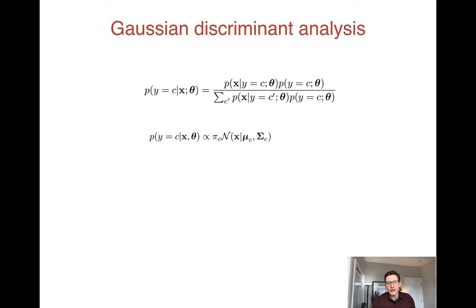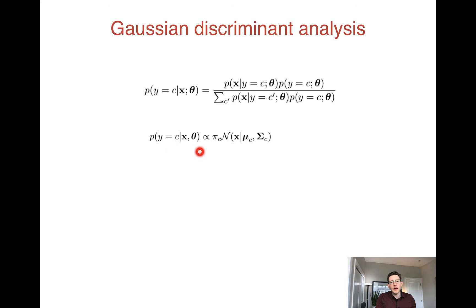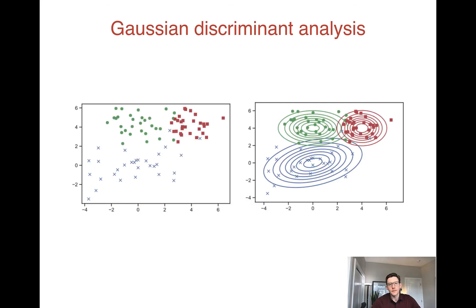Inference of the label — that is, classification — in this model looks very similar to naive Bayes. We use the same Bayes rule to find our solution, and the posterior decomposes as: the probability of a given class is proportional to pi_c, the prior probability of each class, times the probability of X given Y, which we define as a normal distribution with parameters mu_c and sigma_c.